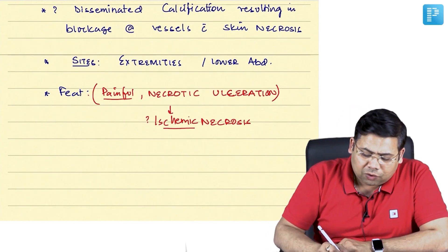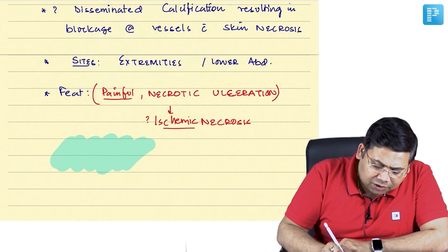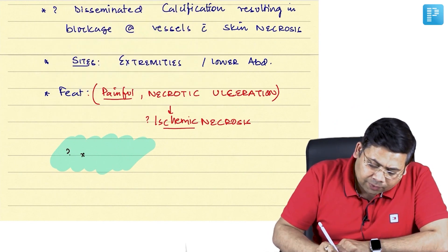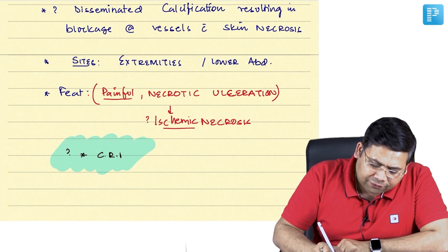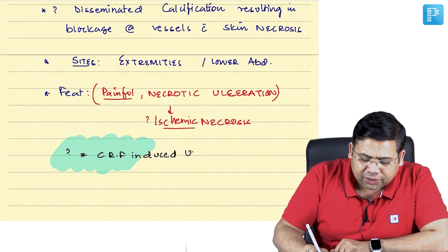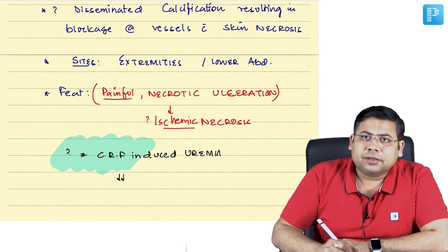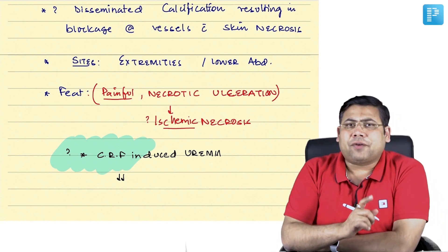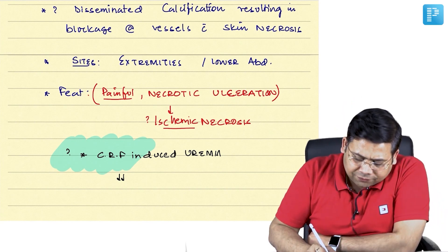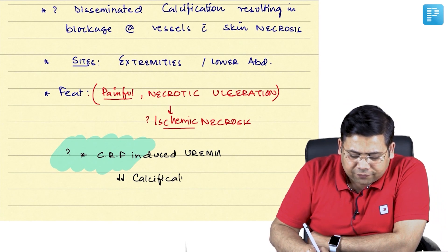Now what is the cause behind this? Everything has a cause. So what is the cause? Answer is, in patients who are having CRF induced uremia, there is decrease in calcification inhibitor factor.